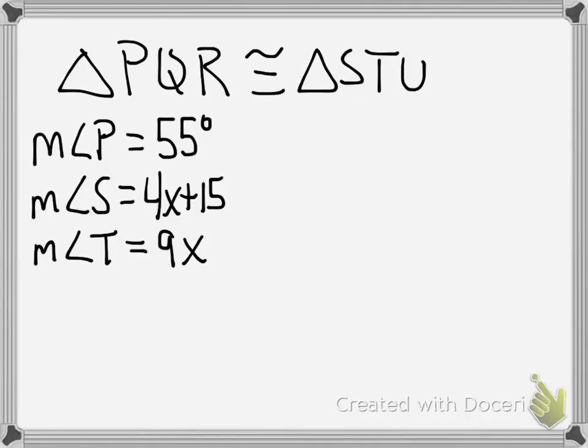Alright, so in the first problem you're told that triangle PQR is congruent to triangle STU. You're told the measure of angle P is 55 degrees, the measure of angle S is 4x plus 15, and the measure of angle T is 9x.